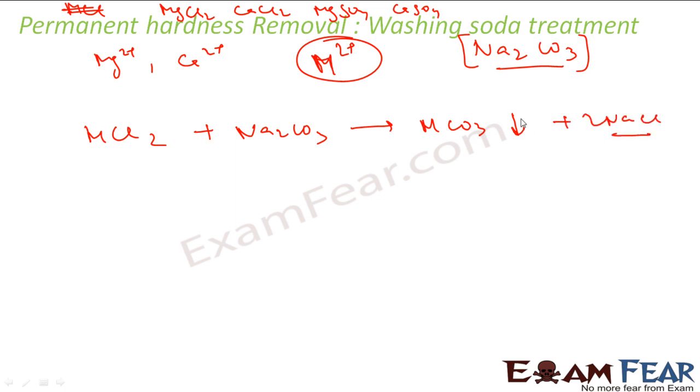Thus we see just by adding washing soda, this hardness is gone. This M can be Mg or Ca. You can write this for calcium also: CaCO3 plus 2 NaCl.